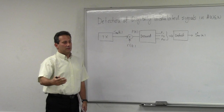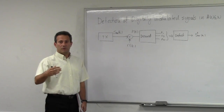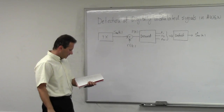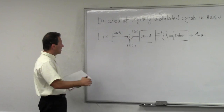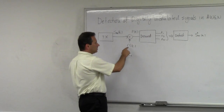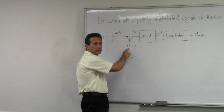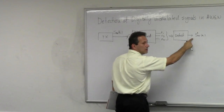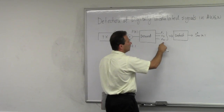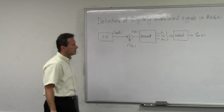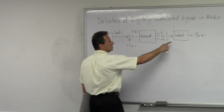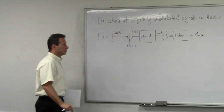A lot of the time — we hope most of the time — the detector is going to be correct and the estimate of what has been sent is the same as what was actually sent. But sometimes an erroneous decision will be made: the transmitter sent one and the receiver thinks it was zero. What we care about here is to determine what is the probability of the detector making such errors.